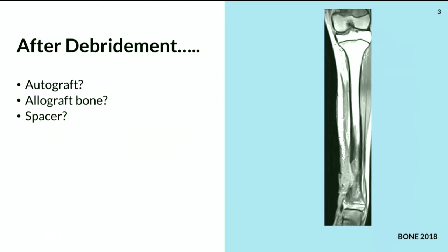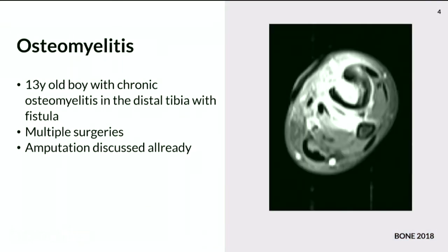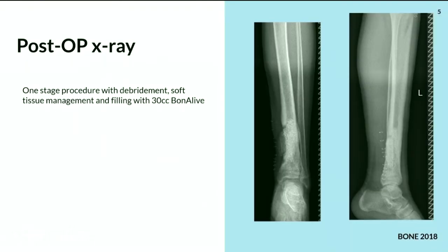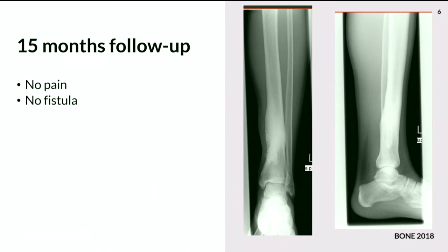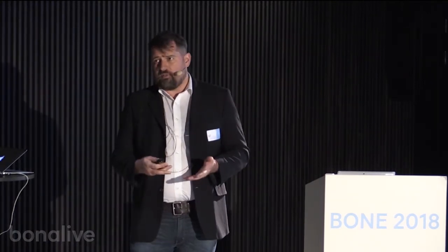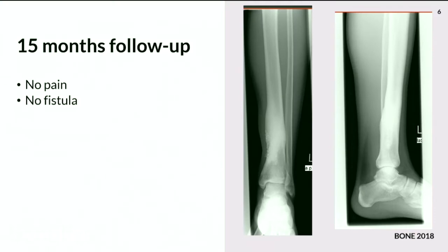This case was shown in the video — the MRI scan of a young boy with a big defect in the tibia. The last follow-up was six weeks ago and everything went well. It's a classical indication for dealing with chronic osteomyelitis of the tibia. The soft tissue is, in my opinion, one of the main issues in the use of any graft, including Bone Alive.